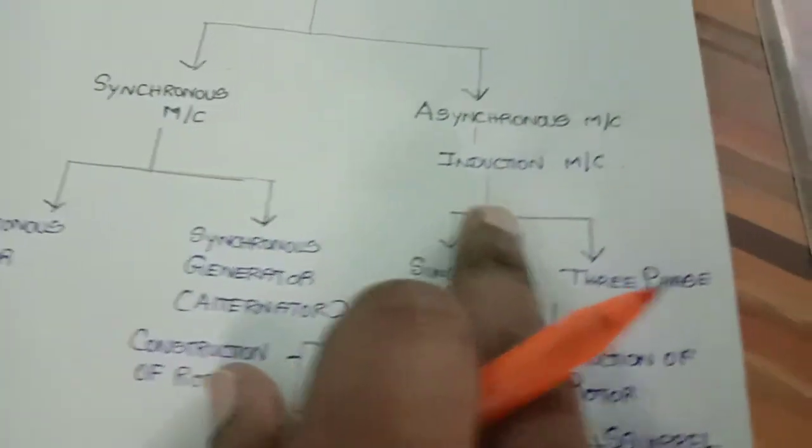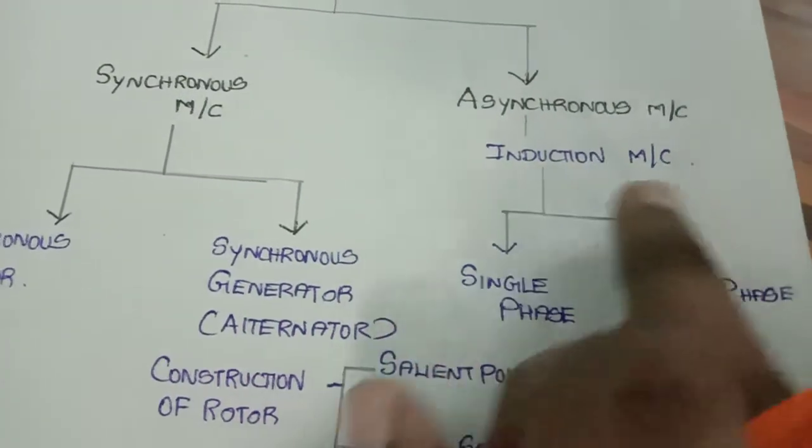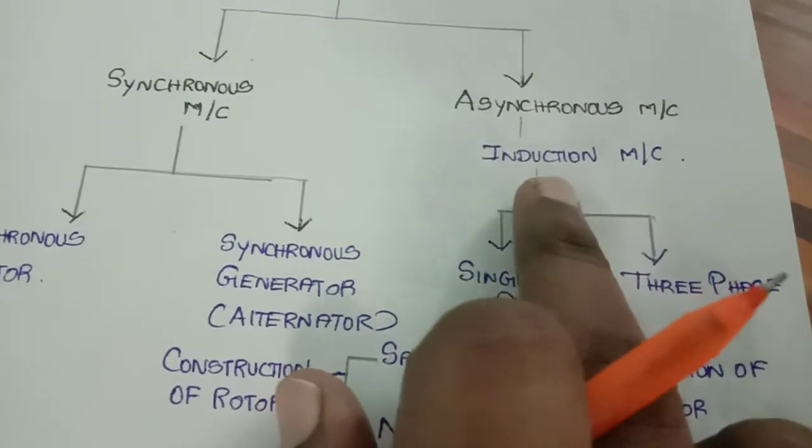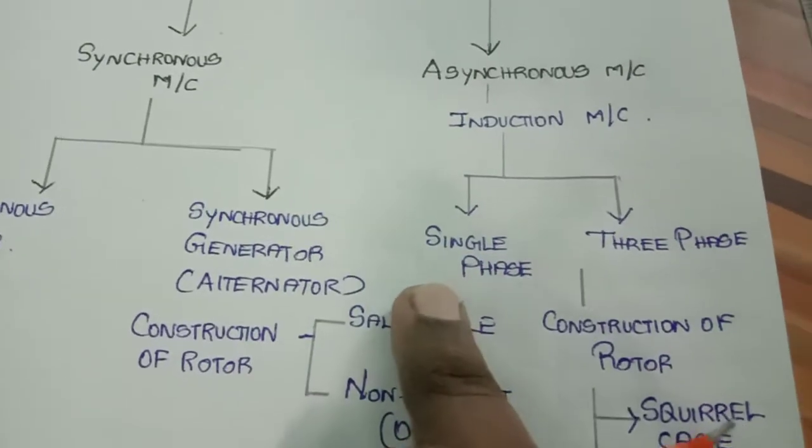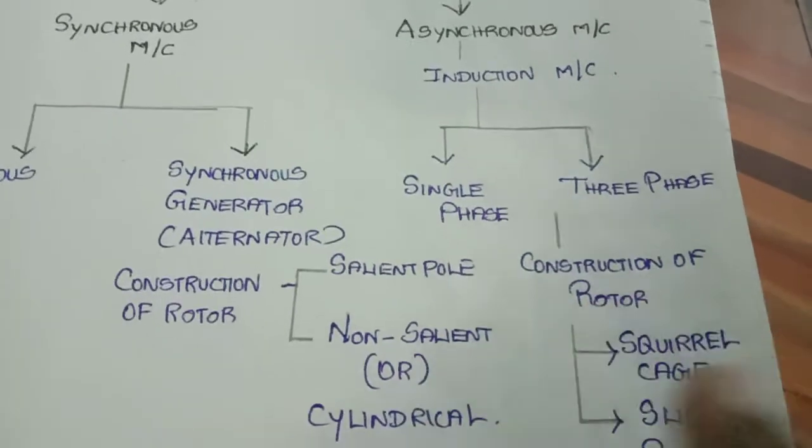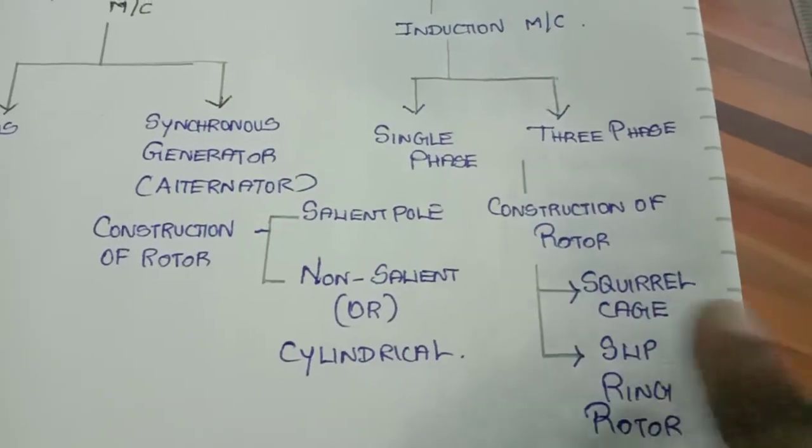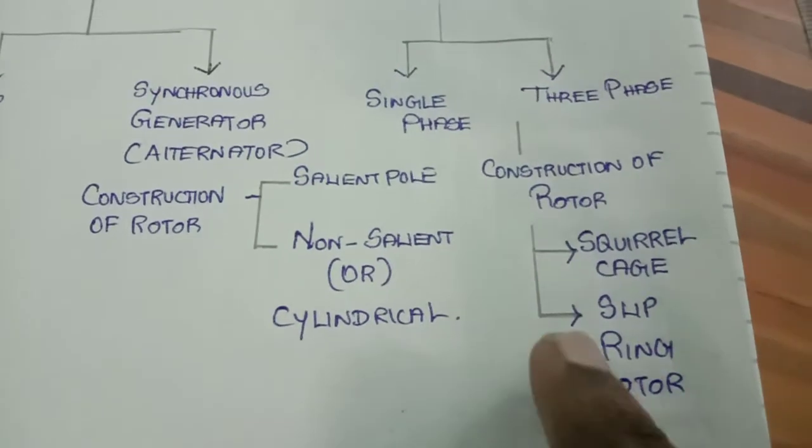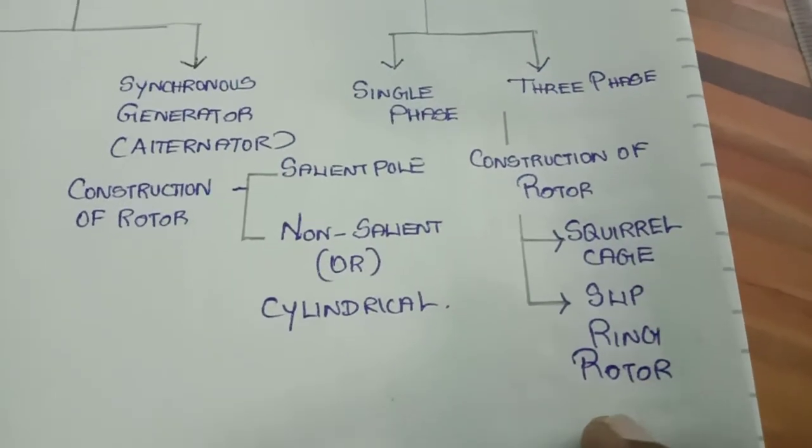Coming to asynchronous machine, the best example is an induction machine. Here, the induction machine is classified into single-phase and three-phase. By the construction of the rotor, we can classify as squirrel cage rotor for low-speed application, and slip ring rotor for high-speed motor.